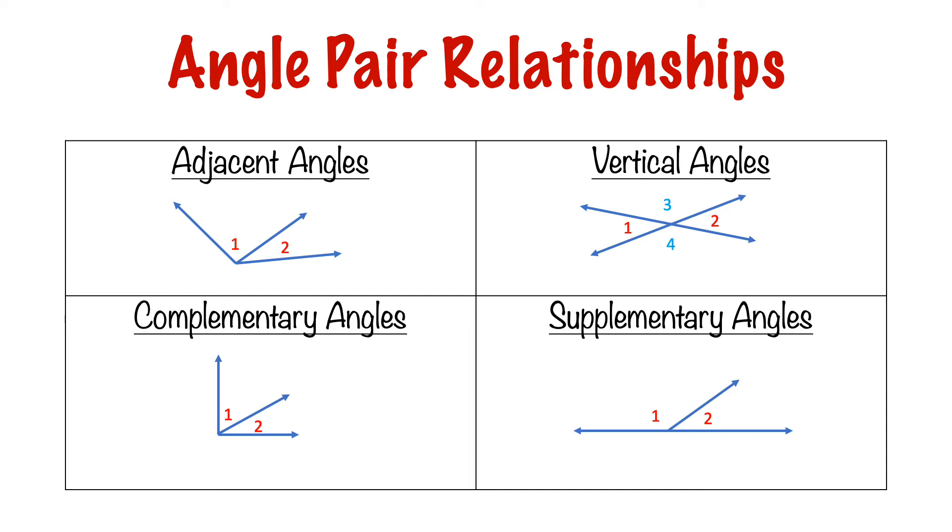Today's lesson is on angle pair relationships. In your textbook this is found in chapter 11, lesson 1. If you look, there are four angle pair relationships that we're looking at today. They are adjacent angles, vertical angles, complementary angles, and supplementary angles.